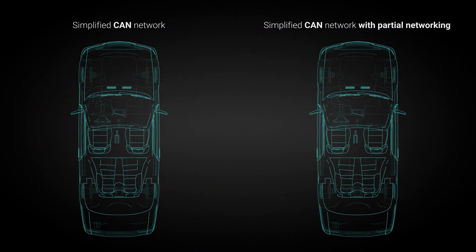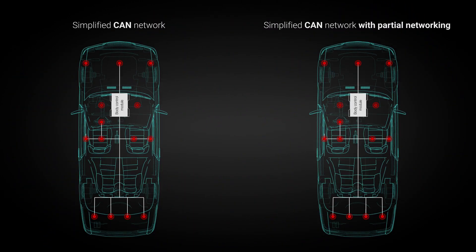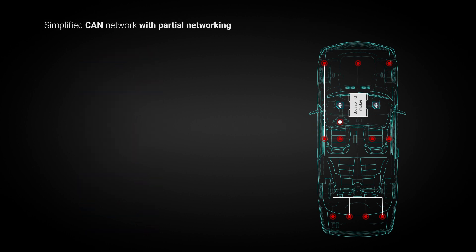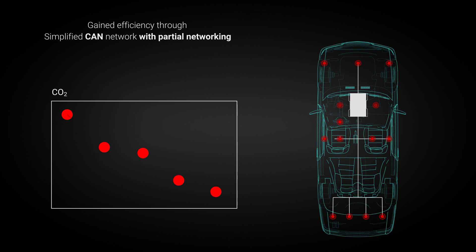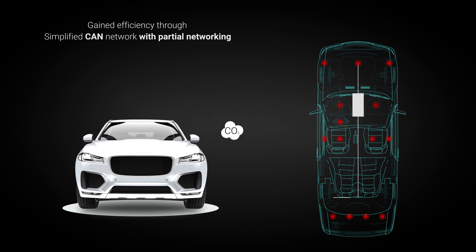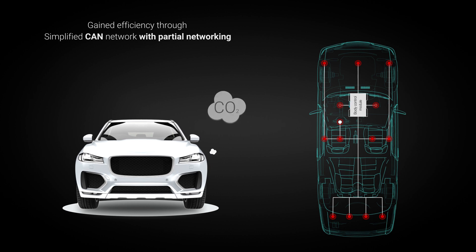This means that when windshield wipers are turned on, the same corresponding wake event does not cause every other node on the bus to wake. Only the wiper motors turn on. This added efficiency can lower power consumption by up to one gram of carbon dioxide. As requirements to reduce carbon dioxide emissions are accelerating across the world, every gram that can be saved helps manufacturers meet these goals.